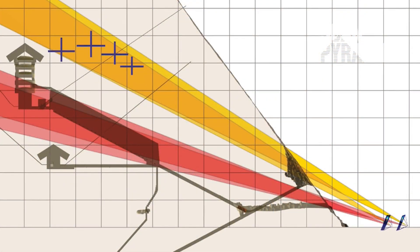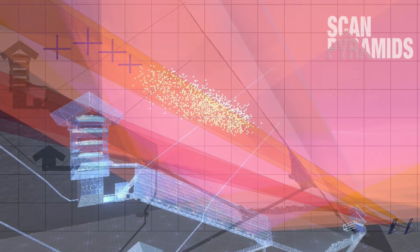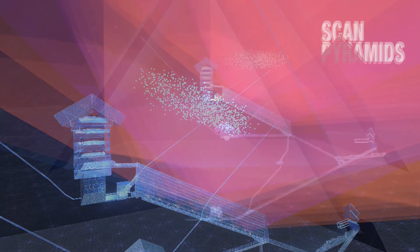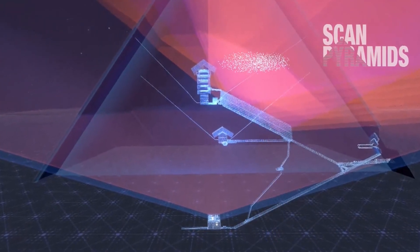And regarding the large void, the team said the big void was again observed from these new measuring points, confirming and refining the results that were published in 2017. The cavity is just above the Grand Gallery, between 10 and 15 meters above.